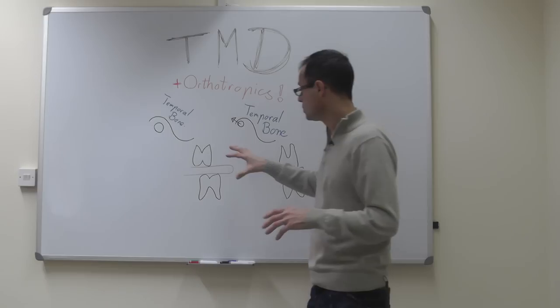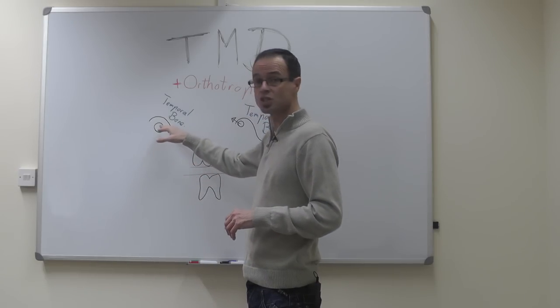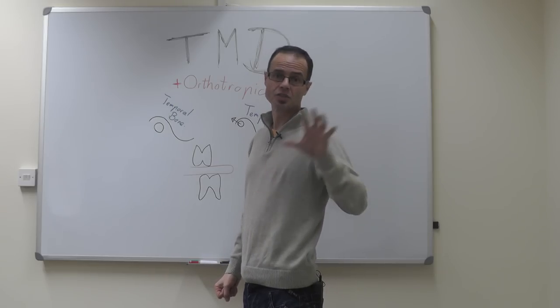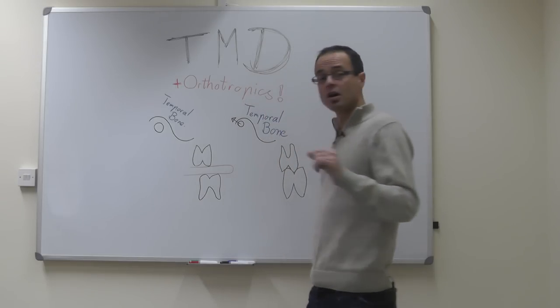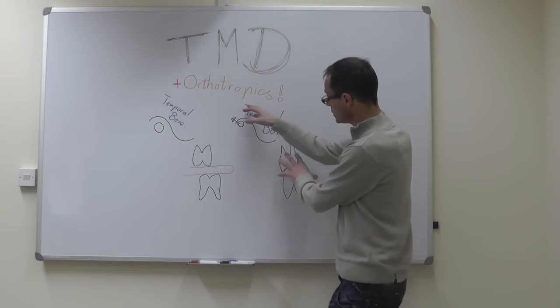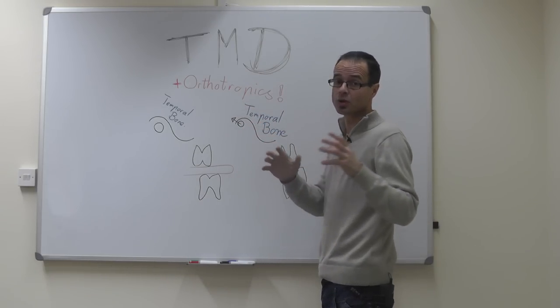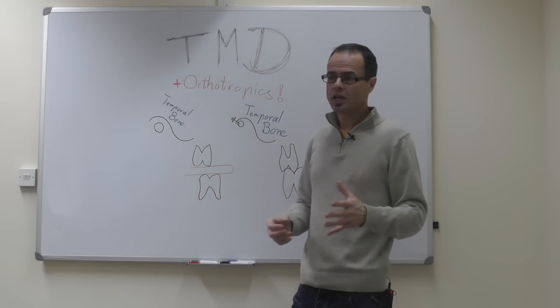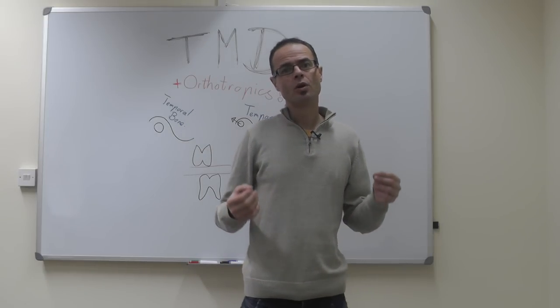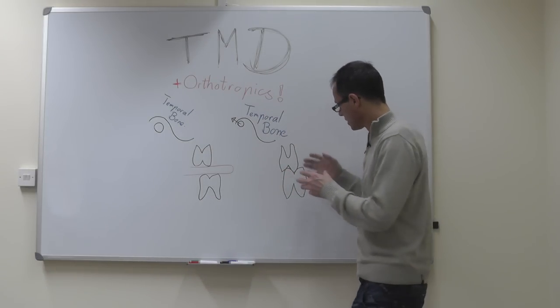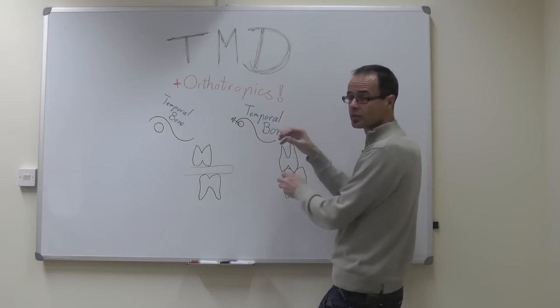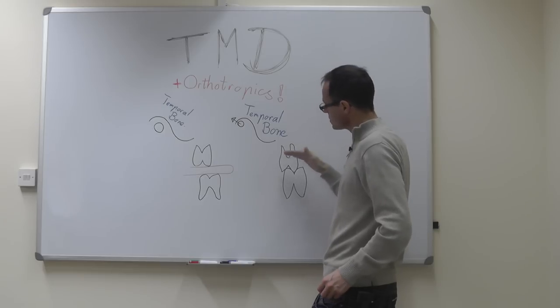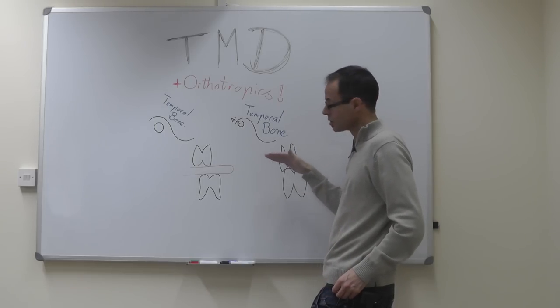So rather than moving the teeth to fit this position, as most practitioners advocate after splint therapy, and rather than moving the jaw joint into the right position, that is one of the surgical approaches, or treating the other symptoms, as most of the other therapies do, we're trying to move the jaw joint by informing the body that this is now the postural position, not this. So the joint should be reformed in this position.